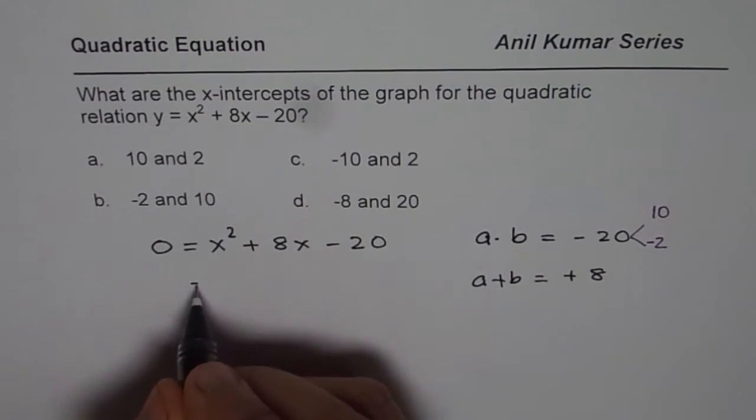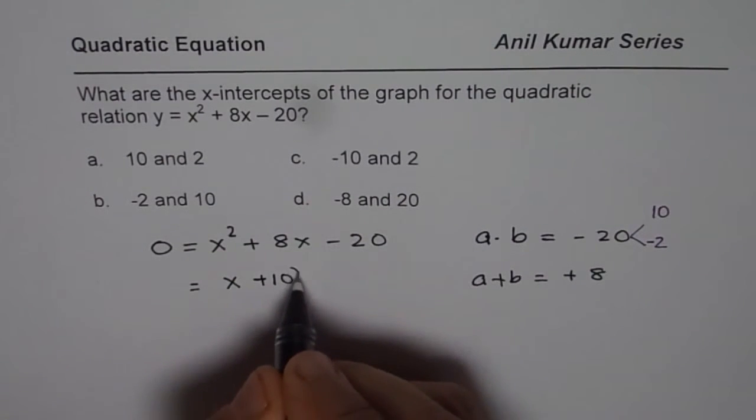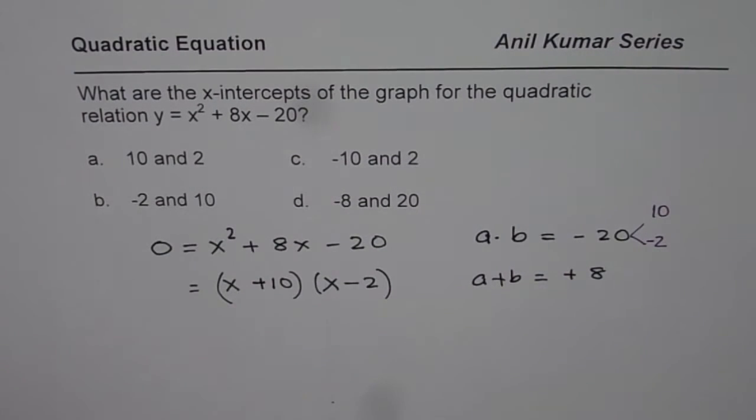That means we can factor it as (x + 10) times (x - 2). Now you get these two factors.